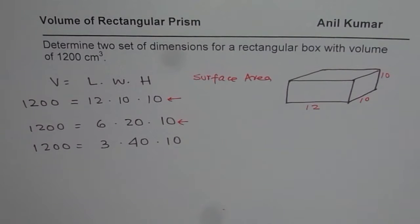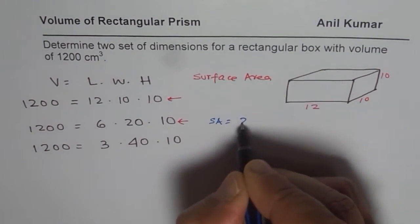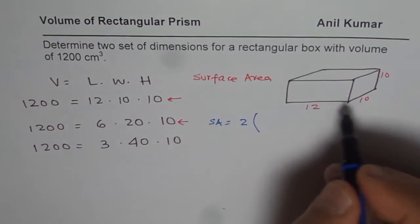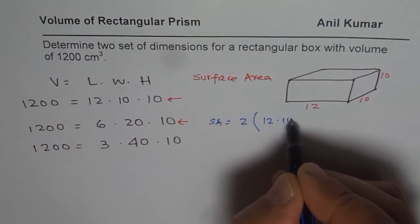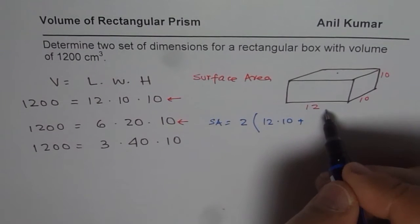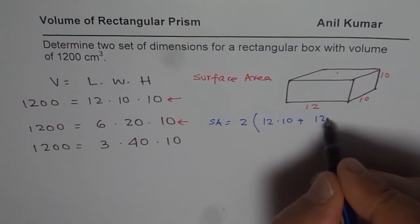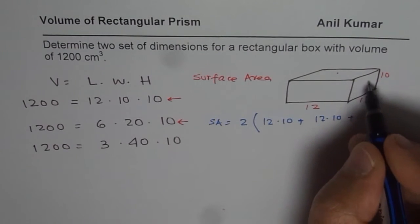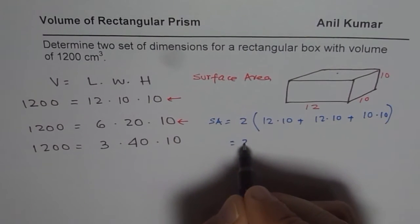So surface area equals 2 times the area of front. The front area is 12 times 10, so you can say 12 times 10 plus top and bottom, which is 12 times 10 again, plus on the sides which is 10 times 10. So you can add this up.